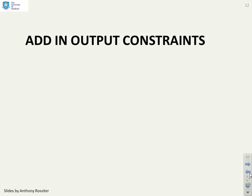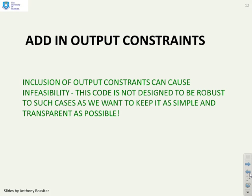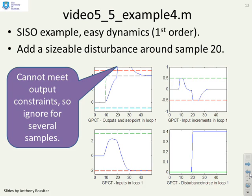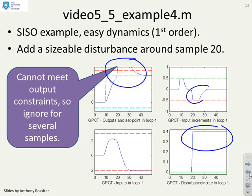What happens when we add in output constraints? When you add output constraints, you might get infeasibility, especially when you have disturbances. All we do is ignore the output constraints when infeasibility occurs. The relevant file is MPC_simulate_tfilter_output_constraints. As noted in the previous video, a large disturbance causes infeasibility, and we're going to get exactly the same case here. There's not a lot to observe, though you may notice a slight change in the signals if you look carefully.